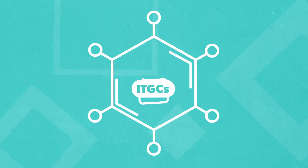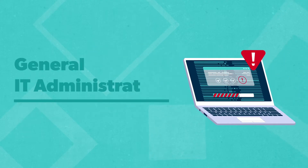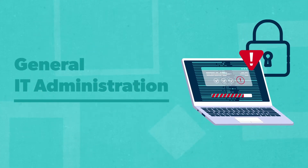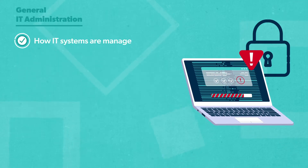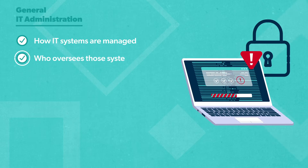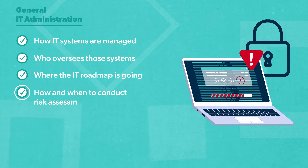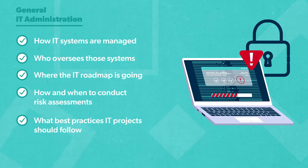ITGCs can take on many forms, but most fall under a few distinct categories. The first is General IT Administration. Most ITGCs fall under the General IT umbrella. General IT Controls may refer to how IT systems are managed, who oversees those systems, where the IT roadmap is going, how and when to conduct risk assessments, and what best practices IT projects should follow.